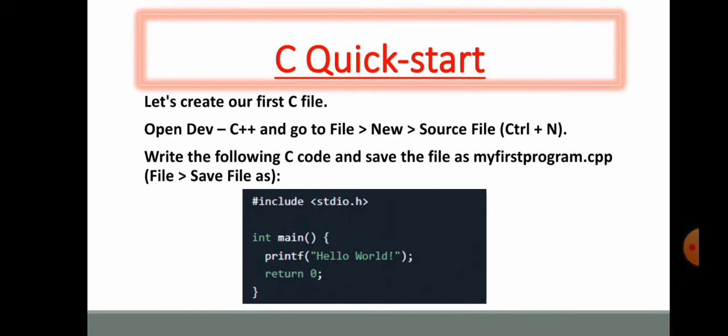If we start quick, let's start our file and our first C file. First of all you will open Dev C++. You will go to File, New, then Source File. Or you can use Ctrl+N, it's a shortcut key.